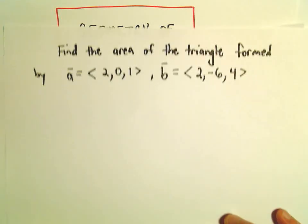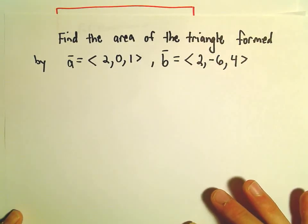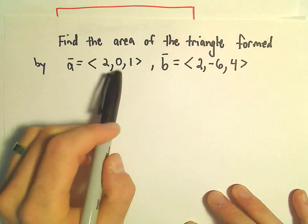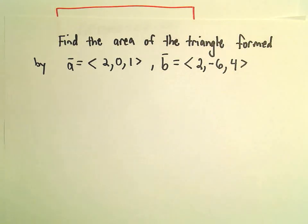Alright, here we're going to find the area of a triangle formed by a couple of vectors. So vector A has components 2, 0, 1. Vector B has components 2, negative 6, comma 4.